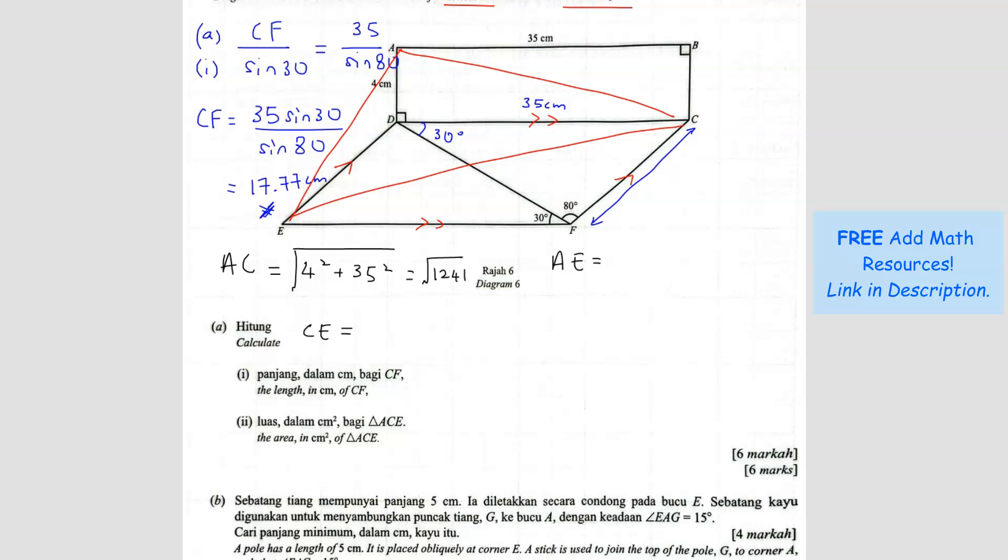AE is also another Pythagoras theorem because it's right angle triangle. AE is here, a right angle triangle. So we can use 4 square plus, so this DE length should be same as CF, right? So CF we already found from question A1. So it's 17.77 square. So we get 18.2146.